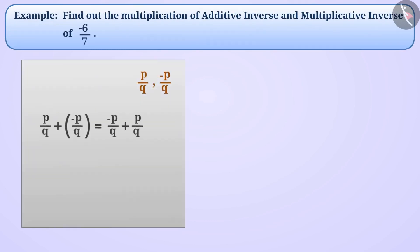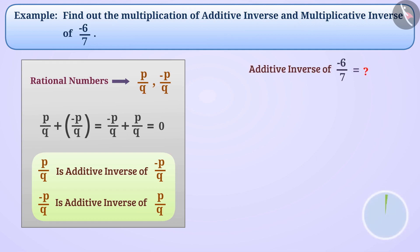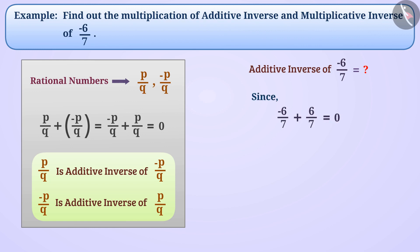If the addition of any two rational numbers is 0, then both rational numbers are additive inverse of each other. Since (-6/7) + (6/7) = 0, therefore the additive inverse of -6/7 is 6/7.